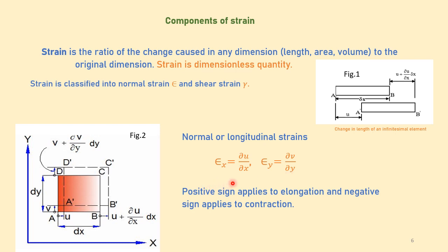Remember, normal strain is taken as positive if there is an elongation in the element, and negative when there is a contraction in the element.